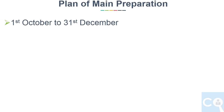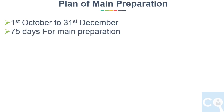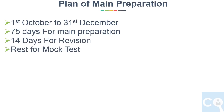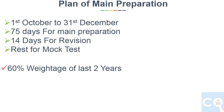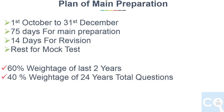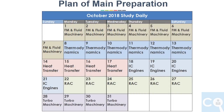Now let's come to the second part: the plan for main preparation. We will start our preparation from 1st October till 31st December. 75 days are kept for main preparation, 14 days for revision, and the rest for mock tests. These 75 days are distributed based on 60 percent weightage of the last two years' average marks and 40 percent weightage of the total questions asked in the previous 24 years' papers. Based on this, the distribution of days for each subject will look like this, starting from October 1st.